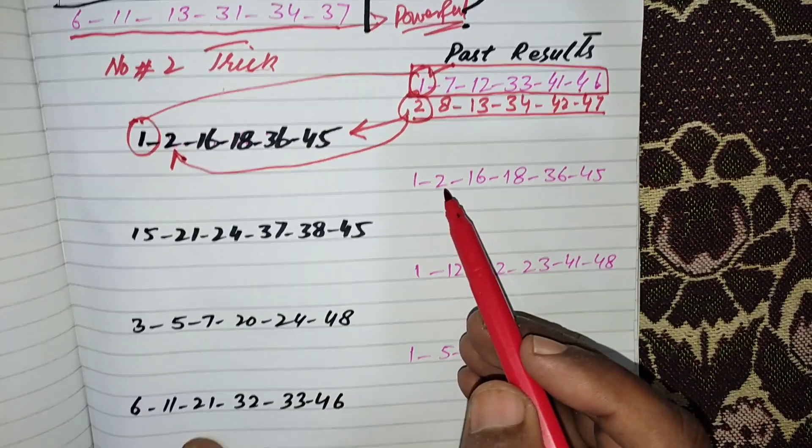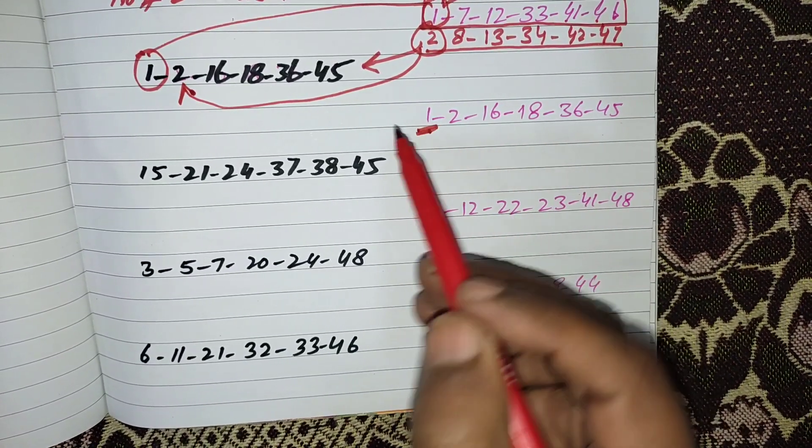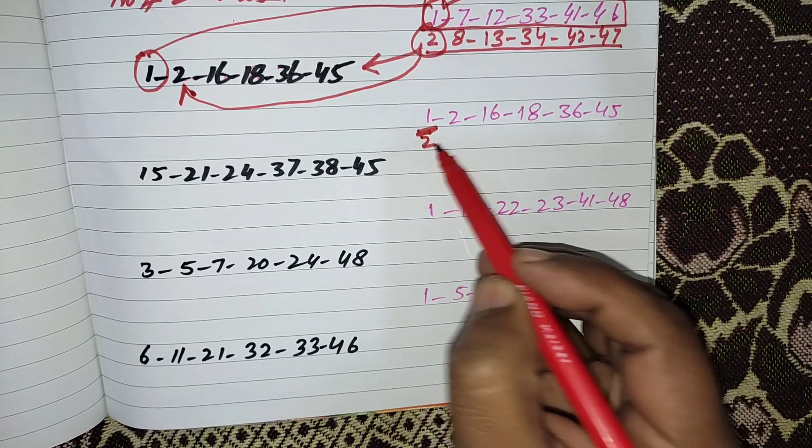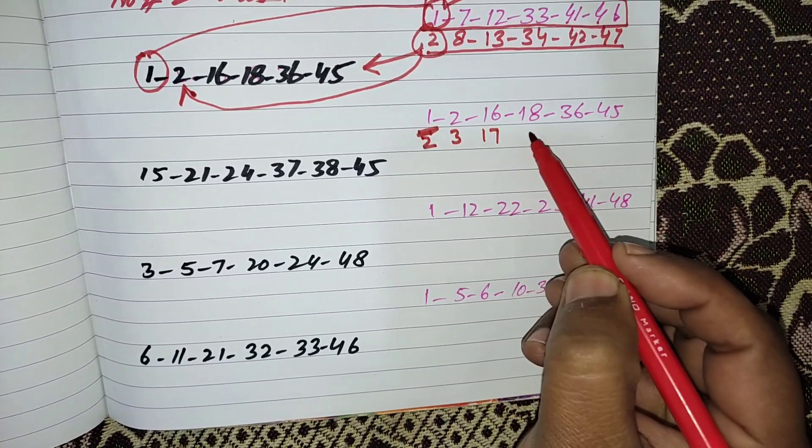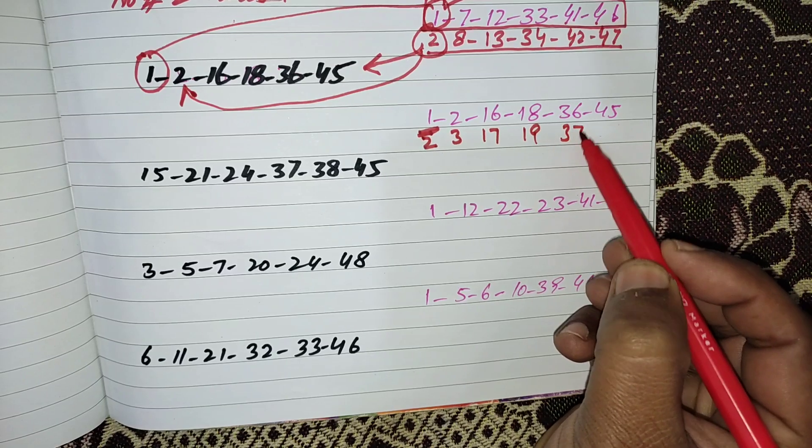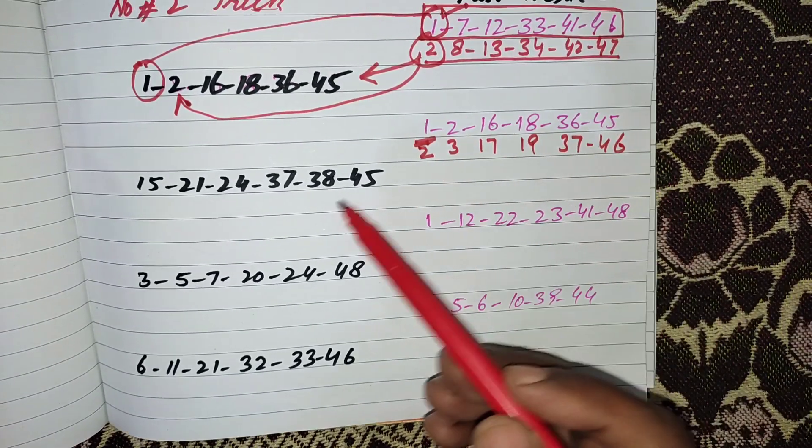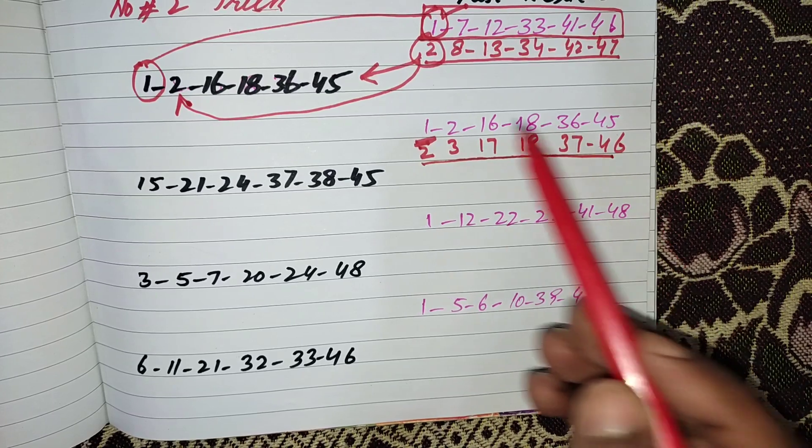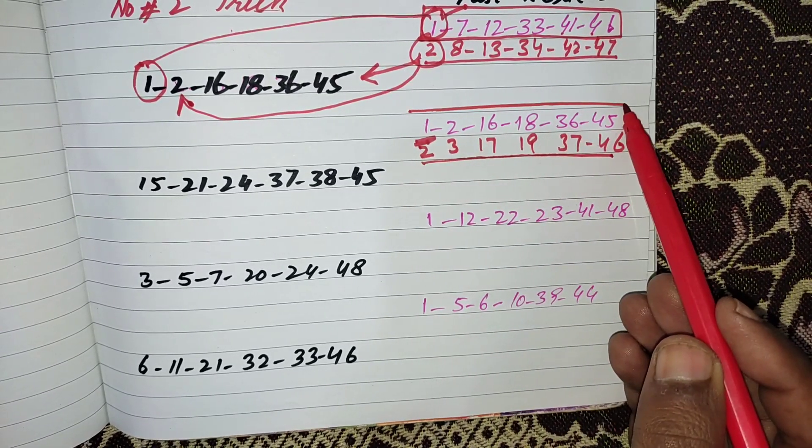Now same procedure will be applied when 1 was came, increase one time: 2, 3, 17, 19, 37, and 46. One number will come from these numbers and one number will come from these numbers.